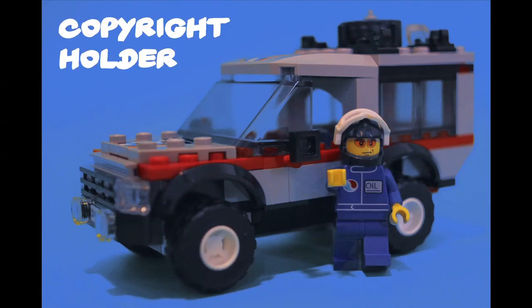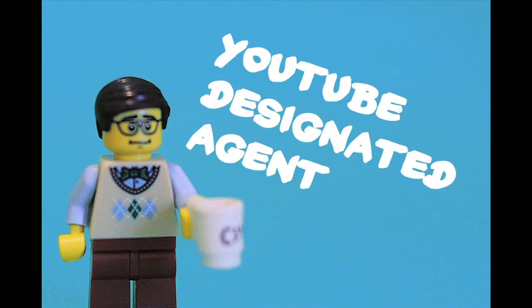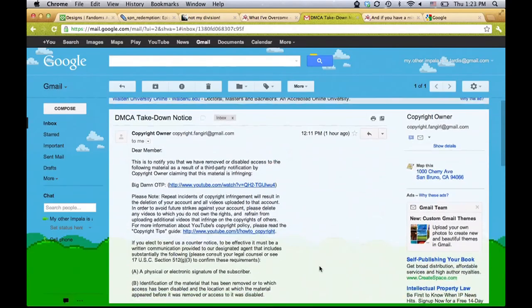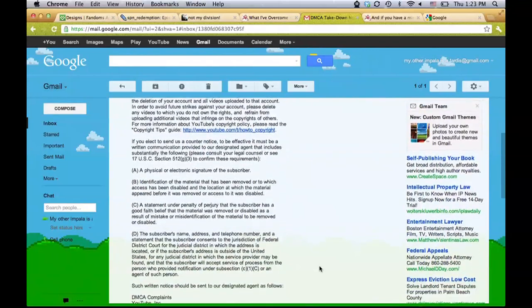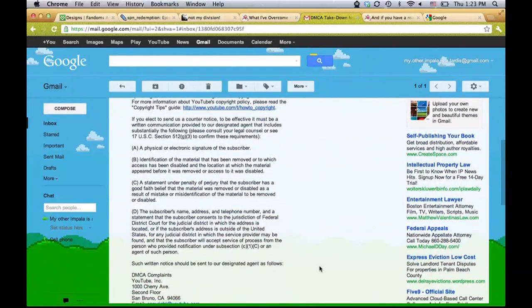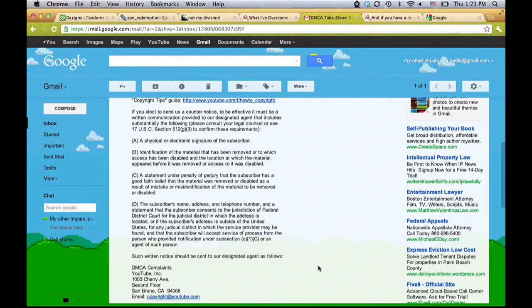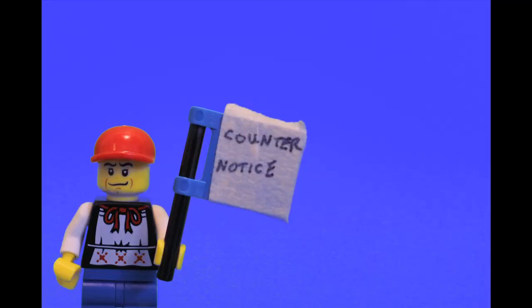When a copyright owner claims someone has uploaded infringing materials, it can request that the online service provider take down the material in a DMCA takedown notice. Once the notice is received, the online service provider must expeditiously remove the targeted content. Online service providers don't need to notify users before removing this content, though they usually do so after the material is removed so that users can object.